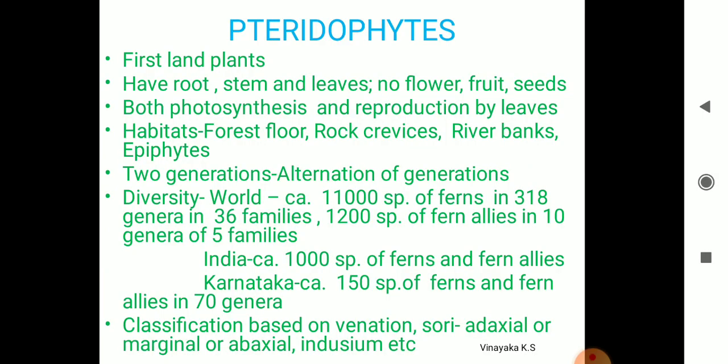In each sorus they produce spores, and these spores help for reproduction. Pteridophytes grow in various habitats: some grow on the ground, some grow on other plants as epiphytes, some on dead wood, and some on the banks of rivers. Pteridophytes have two types of generation — alternation of generation: the gametophytic phase and the sporophytic phase. The gametophytic phase is the gamete-producing structure and the sporophyte is the spore-bearing structure.